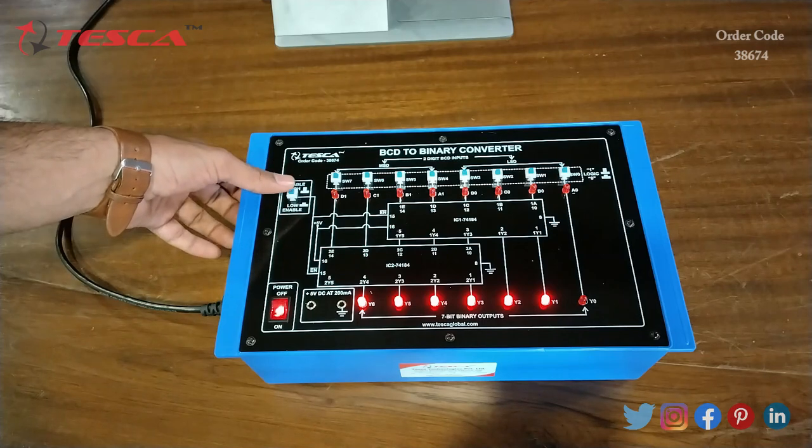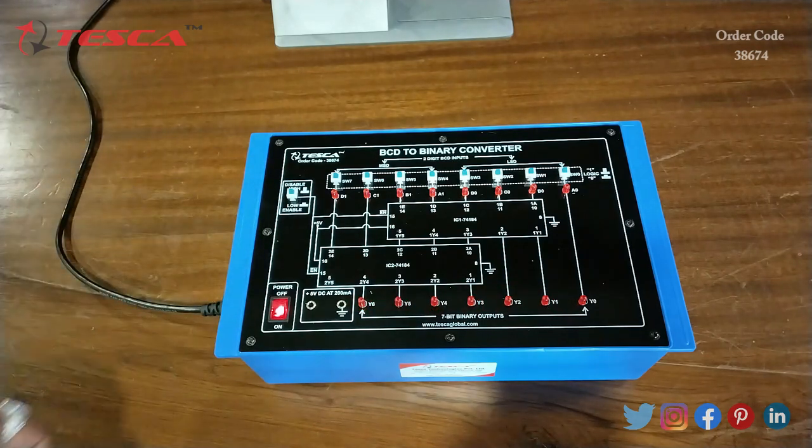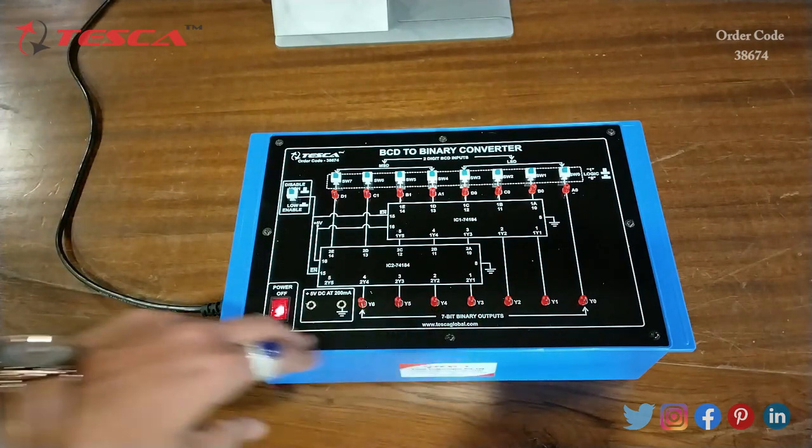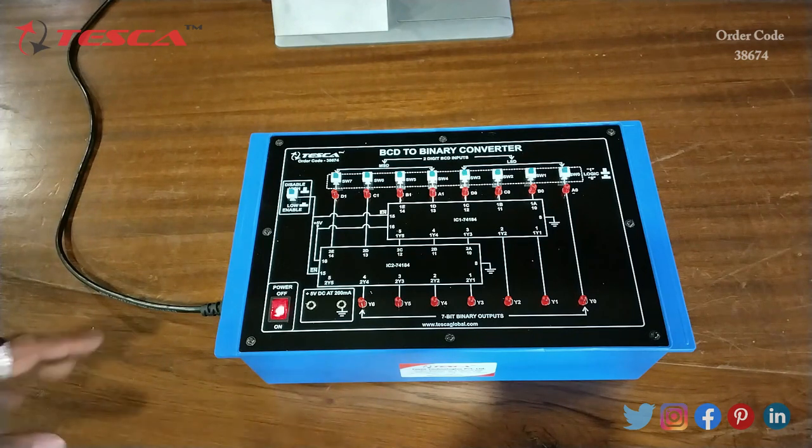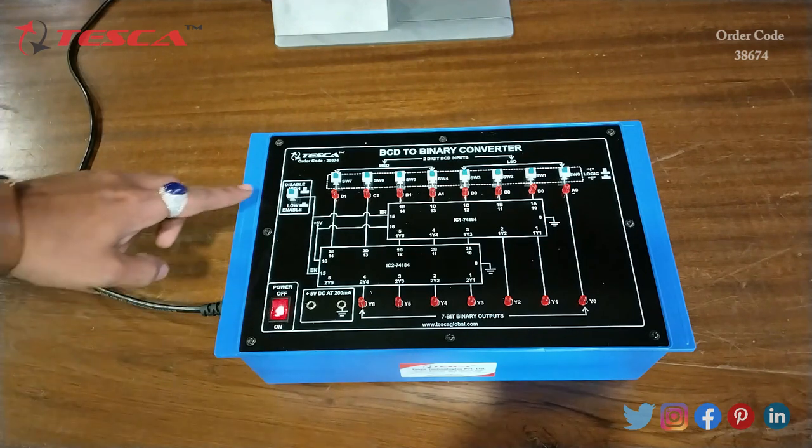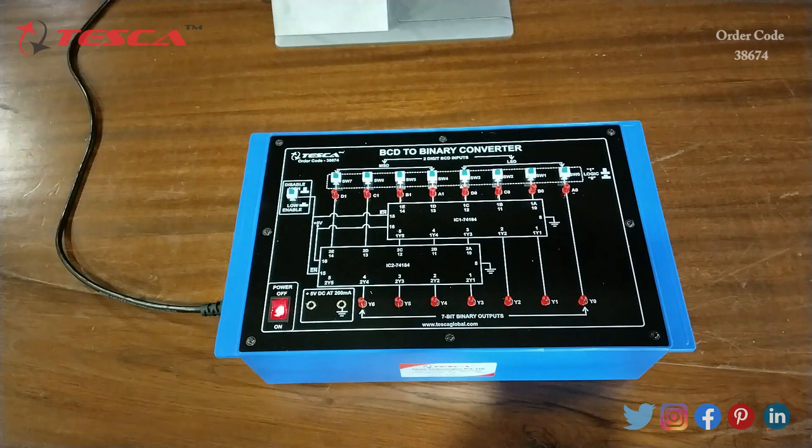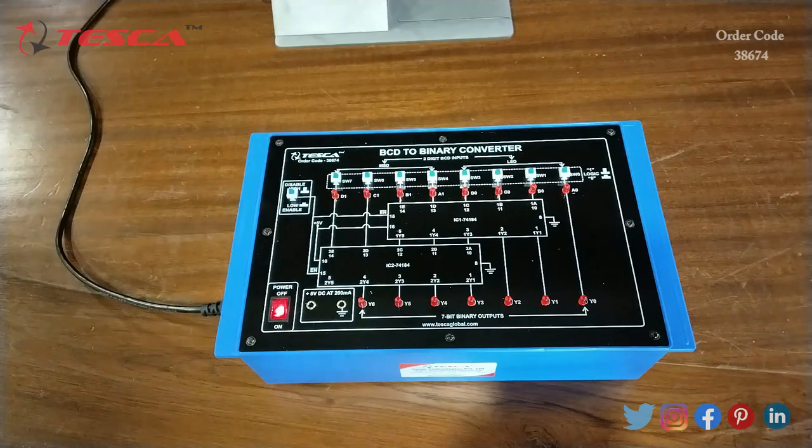When we press it to low enable position, the LEDs are not glowing. For performing the experiment we have to keep this switch at down position or low enable position. Now we will compare the truth table which is mentioned in the manual.